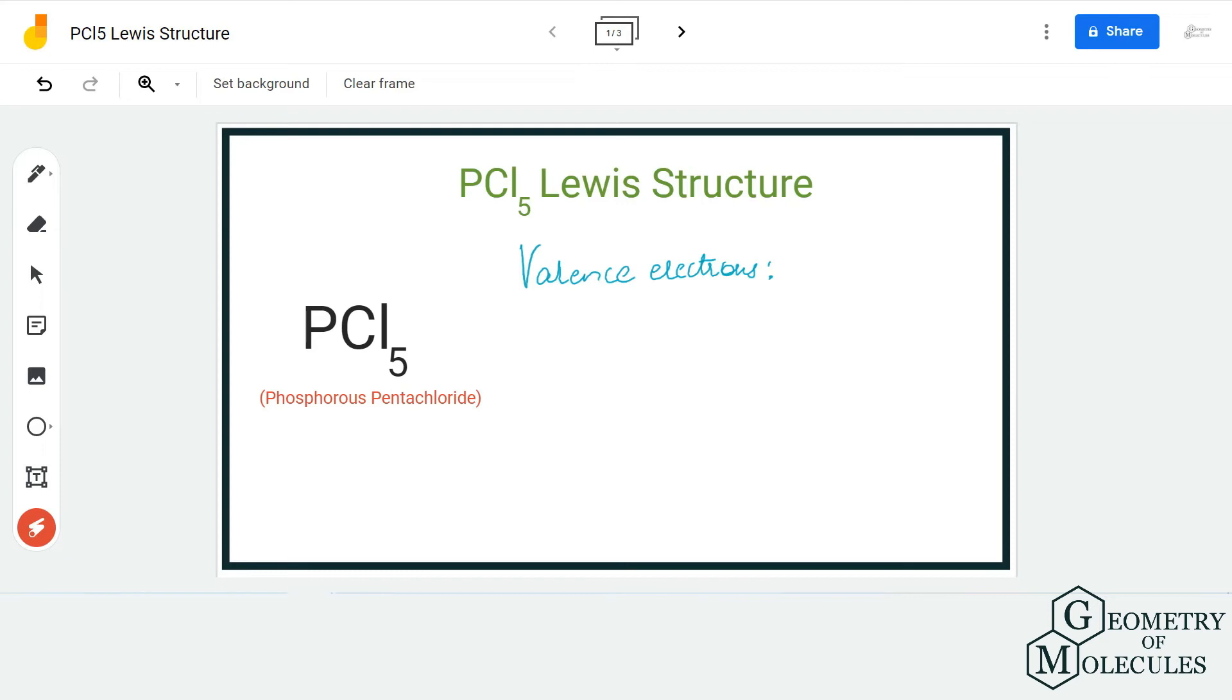Hi guys, welcome back to our channel. In today's video, we are going to determine the Lewis structure for PCl₅, the chemical formula for phosphorus pentachloride. There are five chlorine atoms, and to determine its Lewis structure, we will first need to